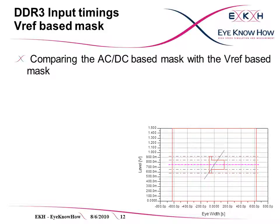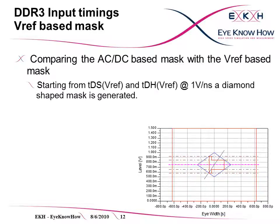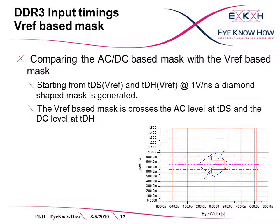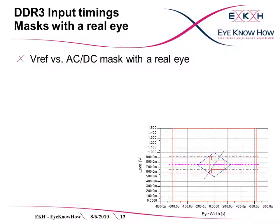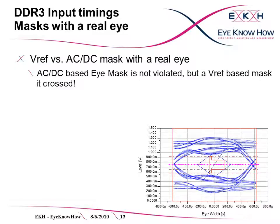This mask can be compared to a VREF-based diamond-shaped mask. At 1V per ns, this is quite simple: starting from data setup and data hold, a line is drawn with a slew rate of 1V per ns, generating a diamond-shaped eye mask. This one crosses the AC level at T data setup and the DC level at T data hold. We can compare these two masks with the eye we have seen before. The AC-DC based eye mask is not violated, but the VREF-based mask is crossed due to the reflections.